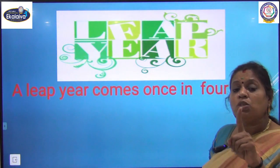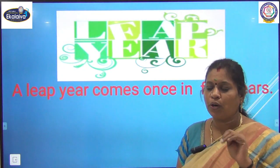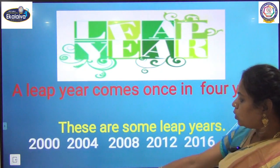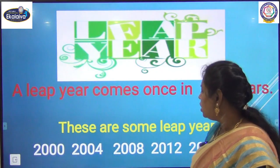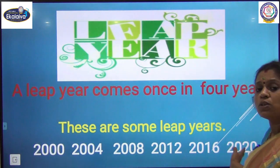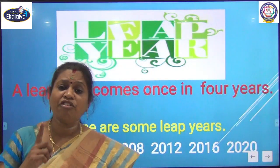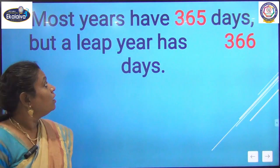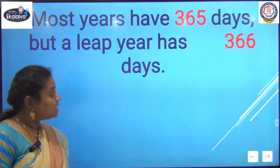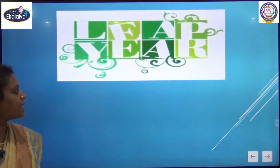A leap year comes once every 4 years. Some examples of leap years are: 2000, 2004, 2008, 2012, 2016 and 2020 — all these are leap years. Most years have 365 days, and a leap year has 366 days.